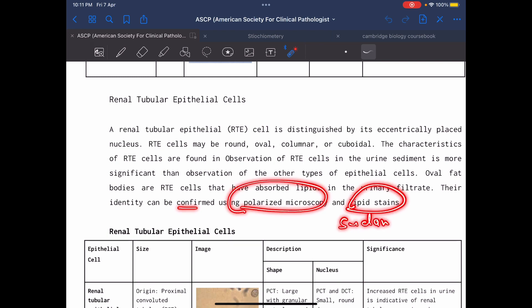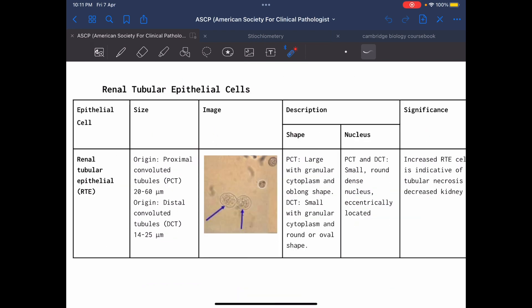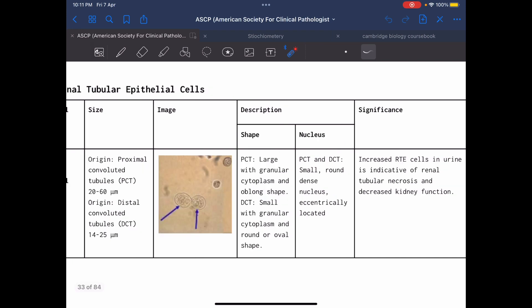As we mentioned before, renal tubular epithelial cells. This form is rounded. You will find the nucleus here, inside. The increased number means renal tubular necrosis or decreased kidney function.